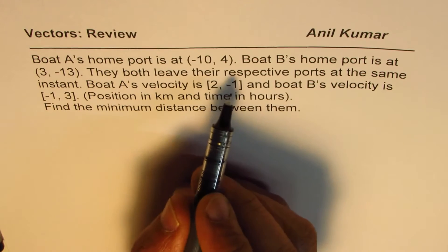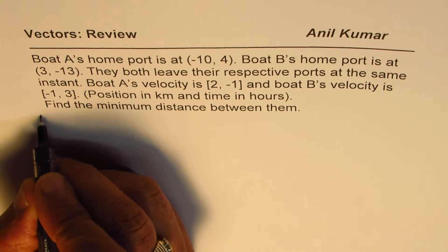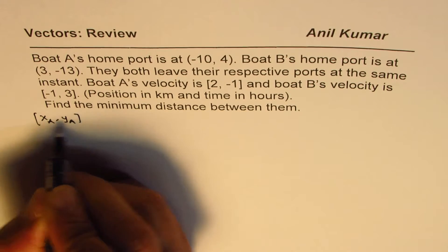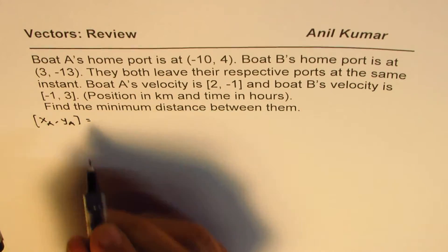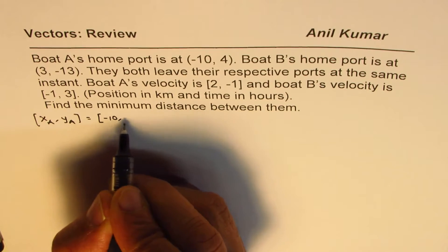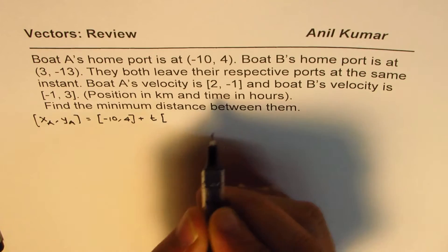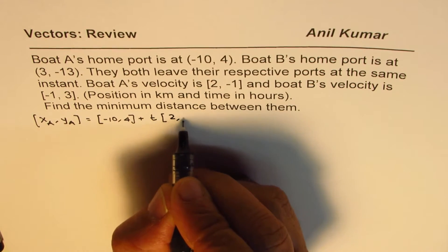Let's first write down the equation of these boats. For boat A, we'll write xA and yA. The position of these boats can be written in vector form with initial position which is (-10, 4) plus t times the velocity for boat A. Velocity is (2, -1).